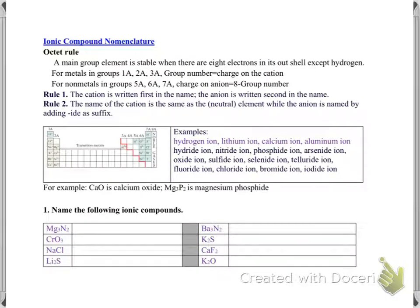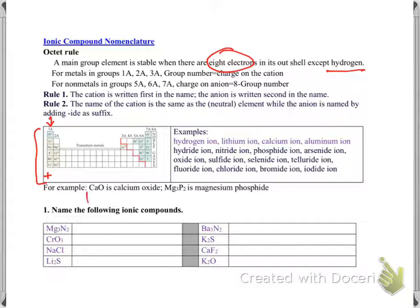In this chapter, what we're learning is how to name the compounds. Each and every element wants to have a noble gas configuration — 8 electrons in the outermost shell, except hydrogen. The first A group elements lose one electron to become stable. If they're losing one electron, they're going to have one positive charge. So the first A group elements have a one plus charge.